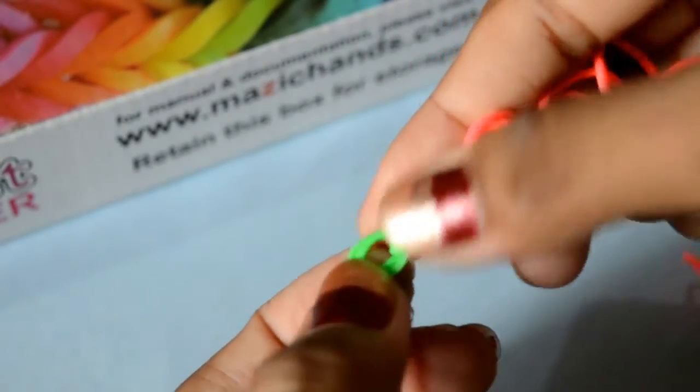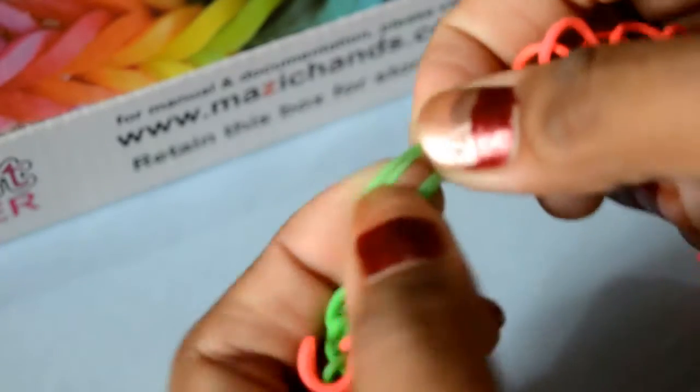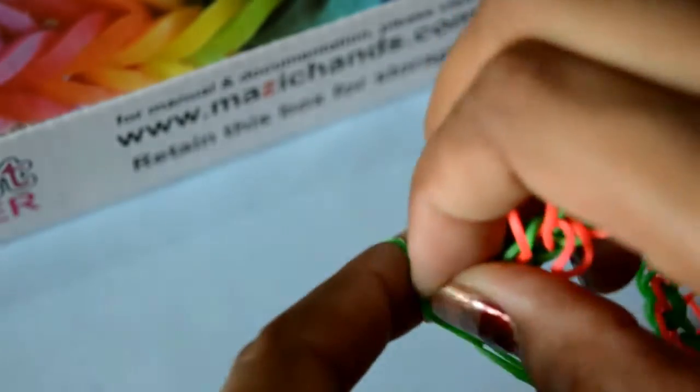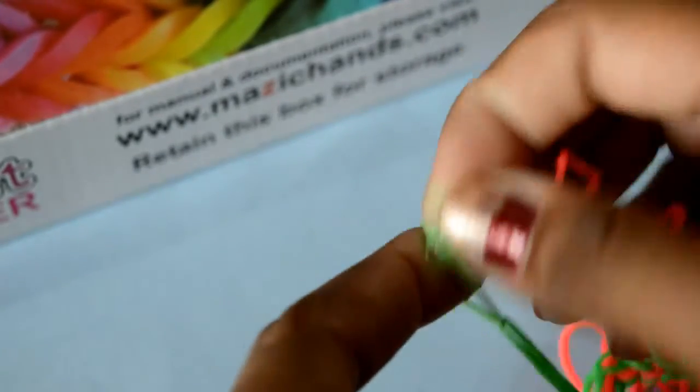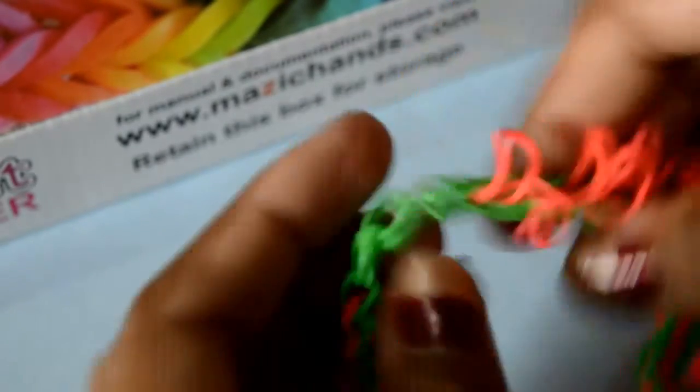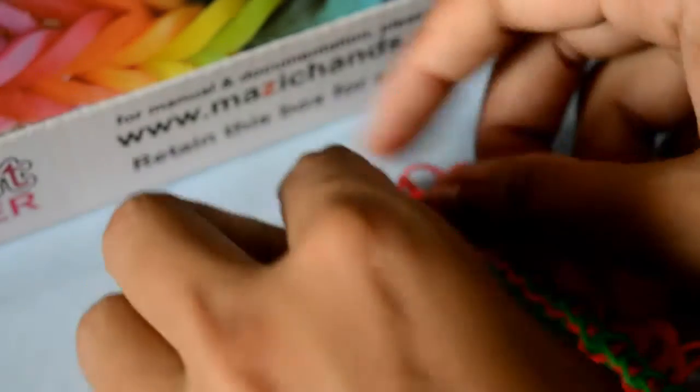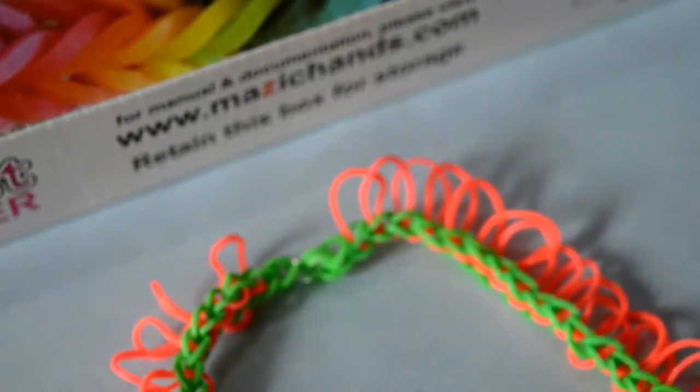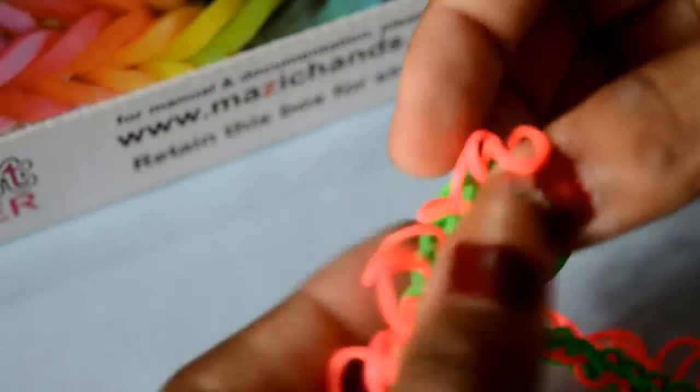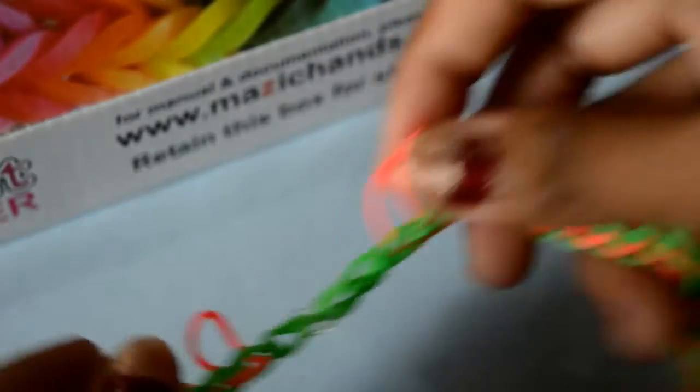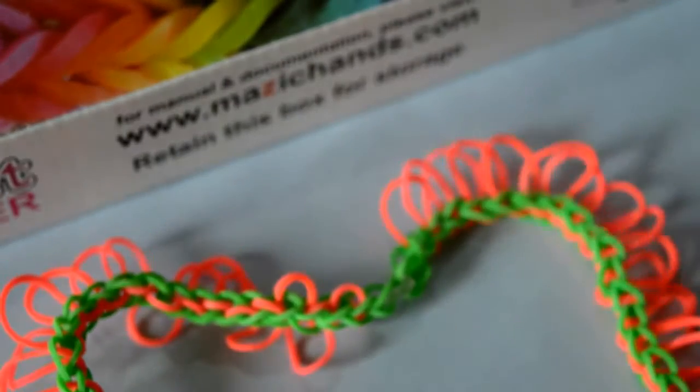Now take the other side of this necklace. Put this rubber band in the C clip like this. Your lovely necklace is ready.